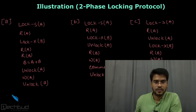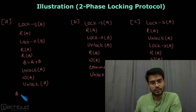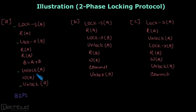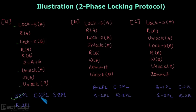Let's start with transaction A and check for basic 2PL. The rule for basic 2PL is that there should be a growing phase and a shrinking phase. We can see that locks are acquired, then locks are released, and it's not violating the condition of basic 2PL — in the growing phase there is no unlocking, and in the shrinking phase there is no new locking. So yes, it is a basic 2PL transaction.